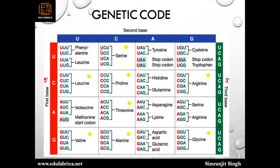Here is a useful codon table for MCQs. On the left side write the first base: U, C, A, G. Horizontally write U, C, A, G again, and vertically write all four letters U, C, A, G. Then combine first, second, and third base letters to get codons: for example UUU and UUC code for phenylalanine, while UUA and UUG code for leucine. Groups that all code for the same amino acid include serine, proline, threonine, alanine, valine, arginine, and glycine.